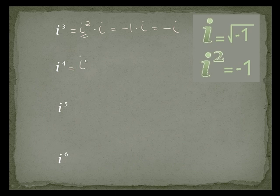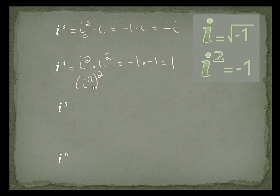i to the fourth I can write as i squared times i squared. i squared is negative 1, and the next i squared is also negative 1, which leaves me with 1. An easier way to do it is to write i squared to the second power — that's because I have two i squareds. A power to a power is multiplied, so this is i to the fourth. Simplifying: negative 1 to the second power is 1.